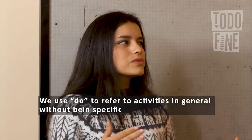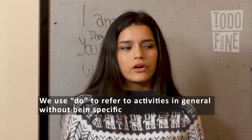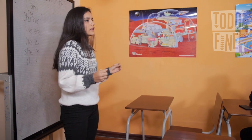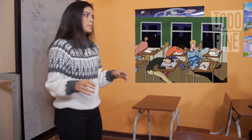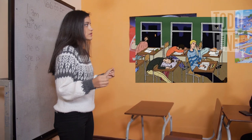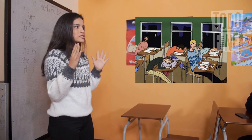Wait, I haven't finished yet. We use Do when we refer to an activity in general without being specific. For example, you are in PE class and you all are playing football, but one person doesn't do anything. So the teacher shouts at him: "Don't just stand there, do something!" She's not referring to a specific action, but it's obvious what he has to do.